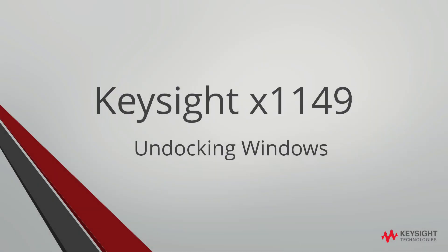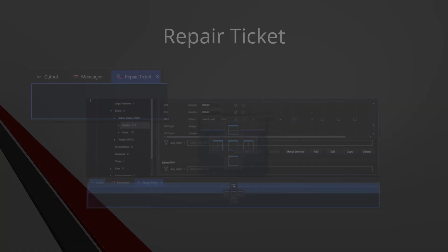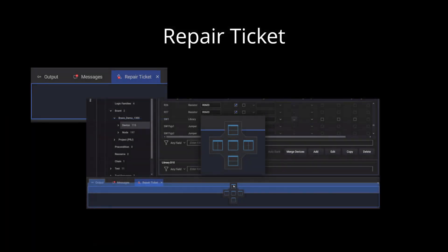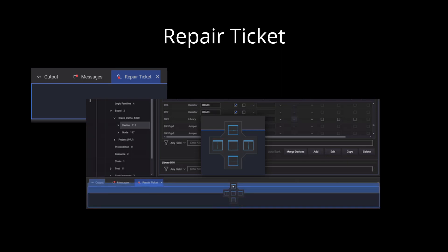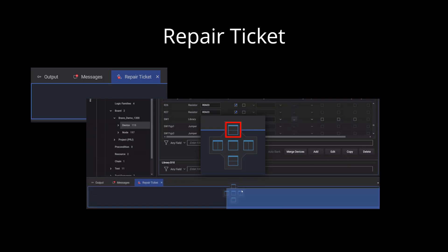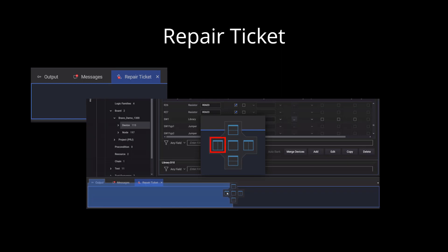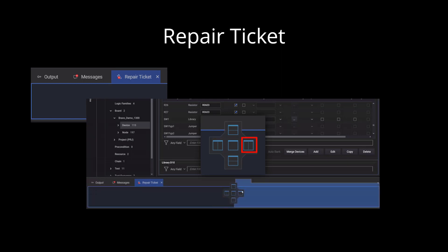As part of the X1149 software, one can choose to dock or undock the windows. This enables users the flexibility to view or hide data when needed. By left-clicking and holding the repair ticket tab, drag it and move the mouse over the output panel. Depending on the arrow position, release the mouse button to your preference.